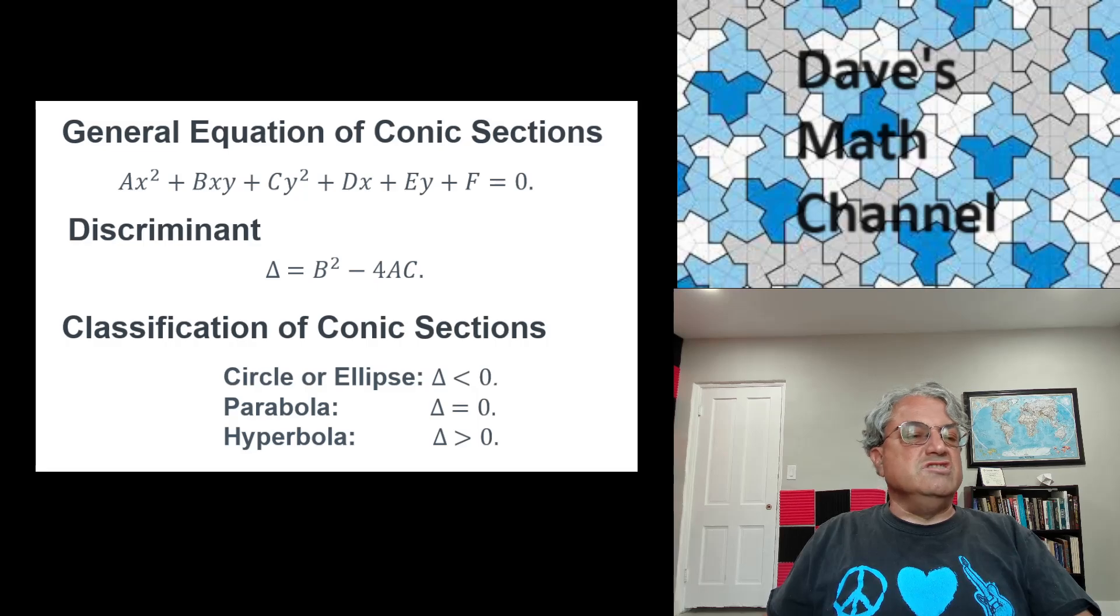So every conic section has a form in the xy plane that looks like this. And you can classify these things by what's called their discriminant. And the discriminant is this quantity called delta here. And it's just b squared minus 4ac. This should look familiar to you because you also use it when you solve the quadratic formula. It's the same, basically the same equation.